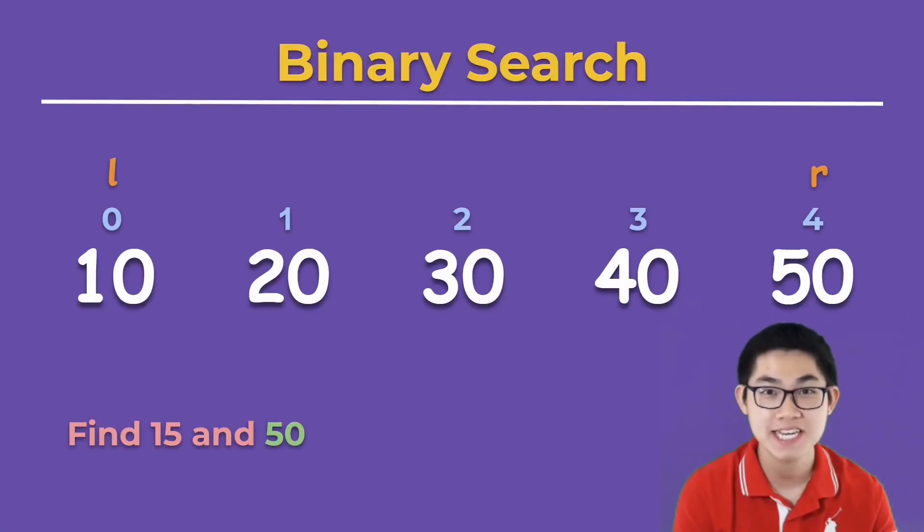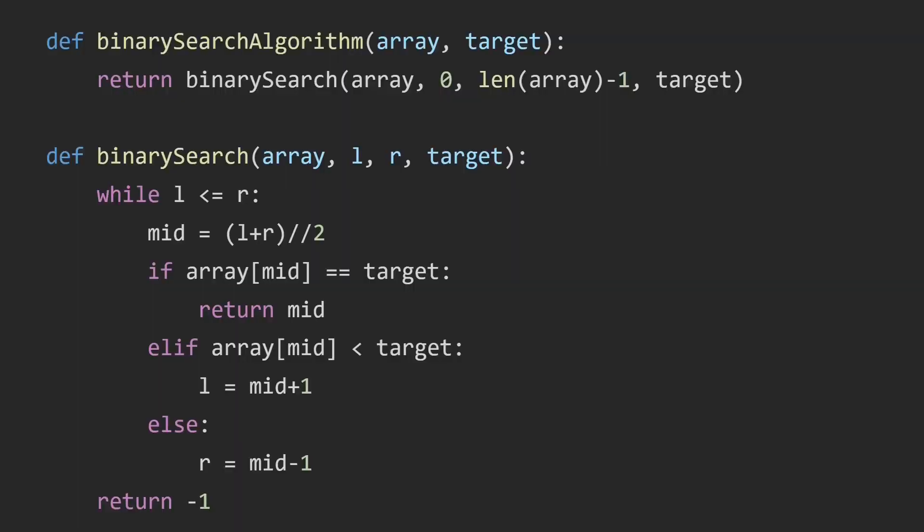For practice I would like you to find number 15 and 50 using binary search. Let's take a look at the Python code. We put L at index 0 and R at the end of the array. Then as long as L is smaller or equal to R, or as long as L is to the left of R, we calculate the mid index. If we find the target then we simply return the mid index.